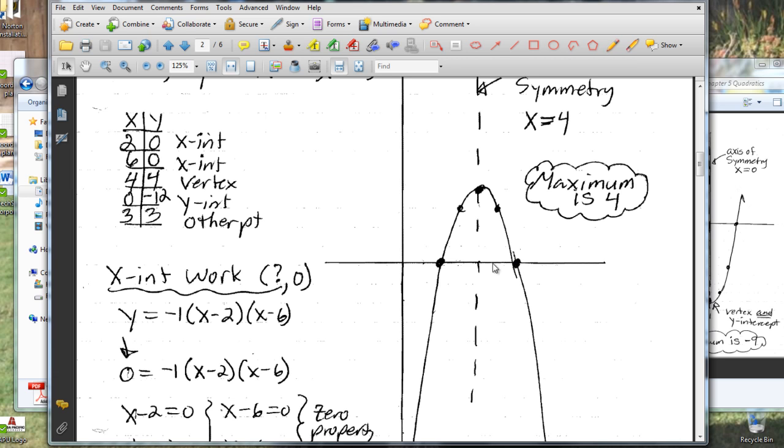And then remember, after we plot the x-intercepts, we know that the axis of symmetry has to be in the middle of those two points. Therefore, the axis of symmetry has to be going down through x equals four. Now, on my paper, you can't really see the lines of the graph paper, but that would be the middle.